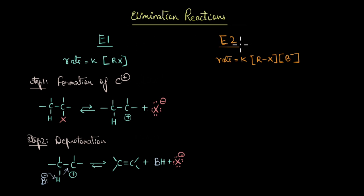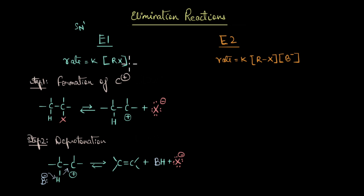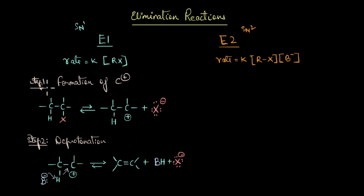The two mechanisms are E1 and E2. E1 can be compared to the SN1 reaction in the sense that both are unimolecular reactions. E1 stands for elimination unimolecular, meaning the rate of the reaction depends only on the substrate or haloalkane. E2 stands for elimination bimolecular, and similar to the SN2 reaction, the rate depends on both the substrate as well as the base.